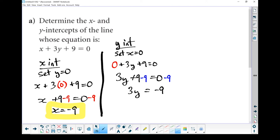Still don't have y all by itself or isolated. I'm going to divide both sides by 3. And I am left with y equals negative 3. There is my y-intercept.